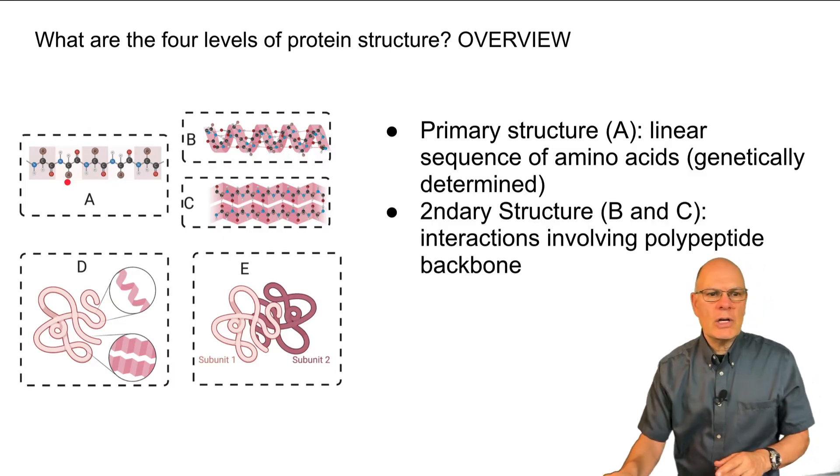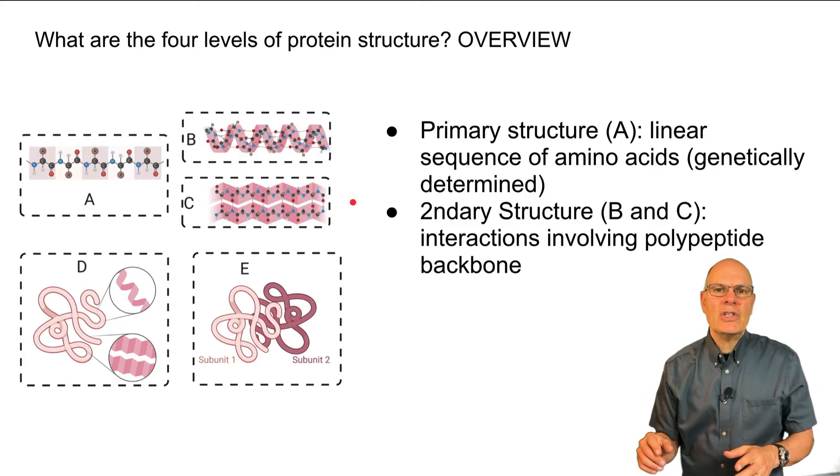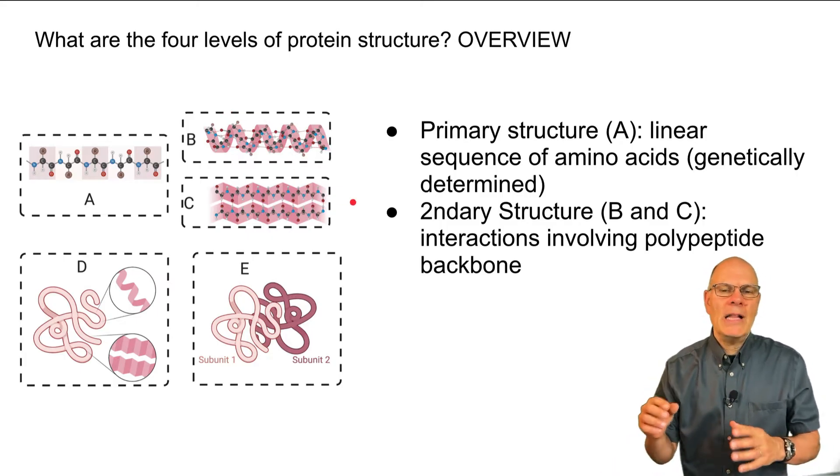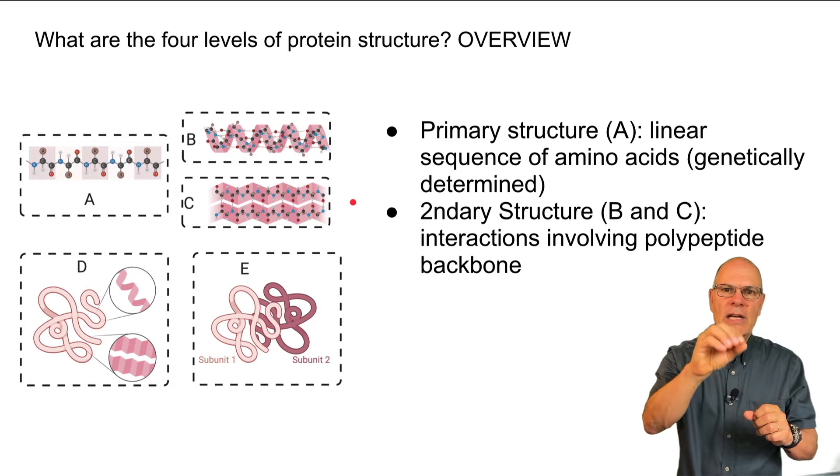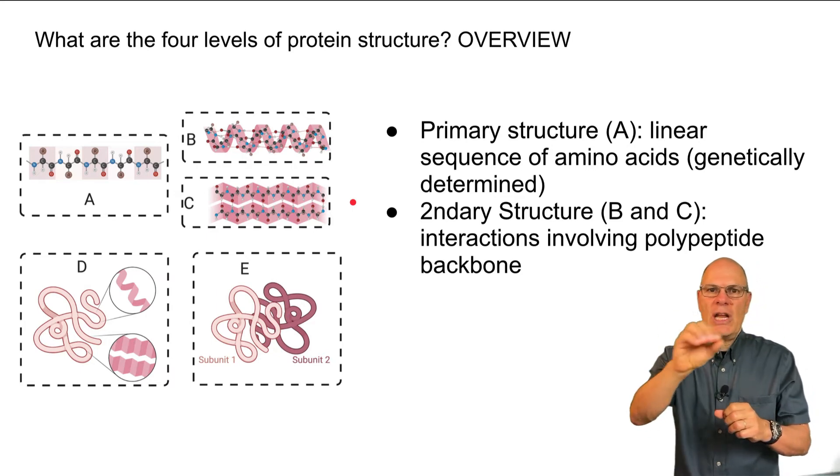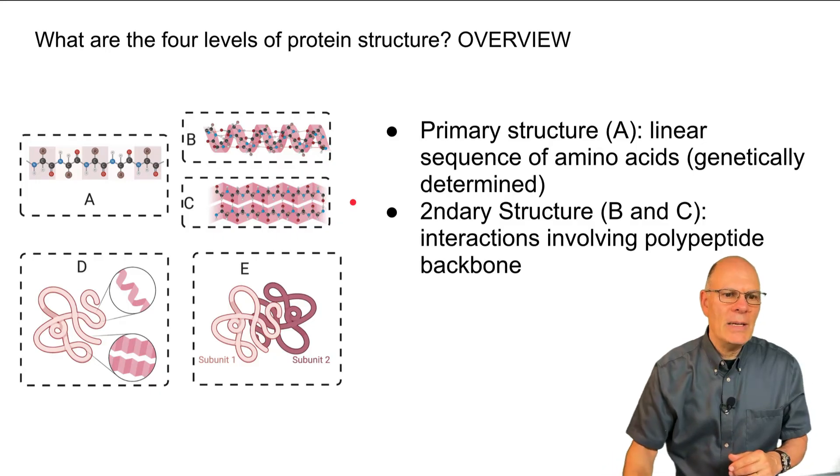The secondary structure, which is shown here and here, those are interactions that involve what's called the polypeptide backbone. When you do a dehydration synthesis and connect one amino acid to the next, to the next, to the next, that chain of carbon, carbon, nitrogen, carbon, carbon, nitrogen, that's the polypeptide backbone.